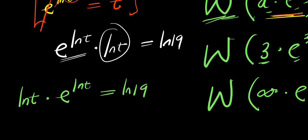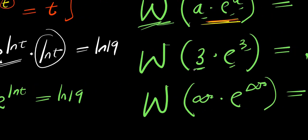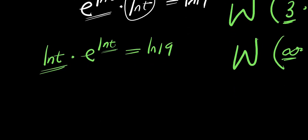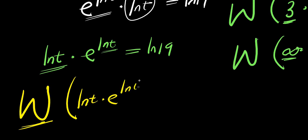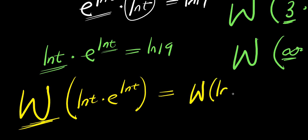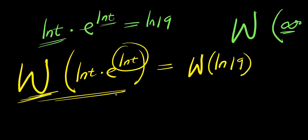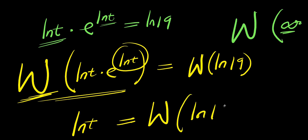Now at this point, if you look at the model for the Lambert W function — a times e to the power of a, 3 times e to the power of 3 — this is quite correct because the ln t is exactly what we have here. So we can apply the Lambert W function at this point. We have W of ln t times e to the power of ln t equals W of ln 19. Since applying W gives back the inner expression, ln t equals W of ln 19.